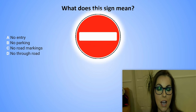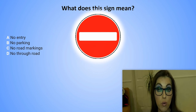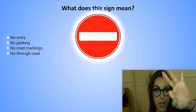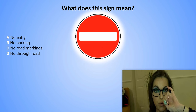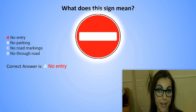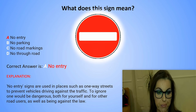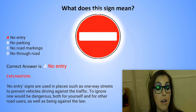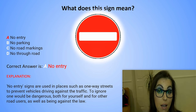What does this sign mean? A. No entry. B. No parking. C. No road markings. D. No through road. The correct answer is A. No entry. Explanation: No entry signs are used in places such as one-way streets to prevent vehicles driving against the traffic. To ignore one would be dangerous both for yourself and for other road users, as well as being against the law.